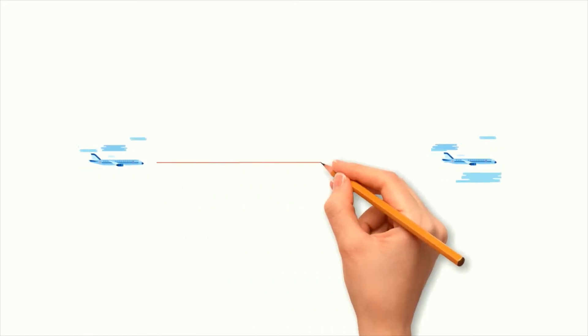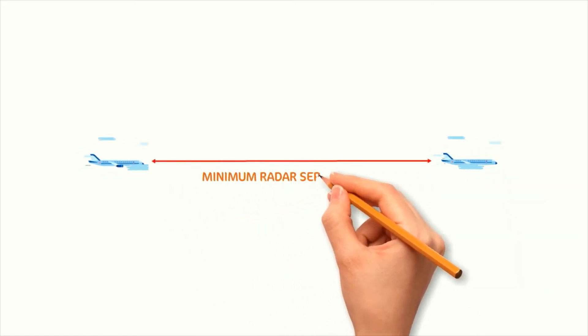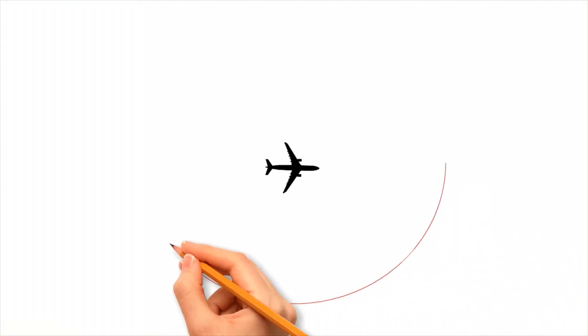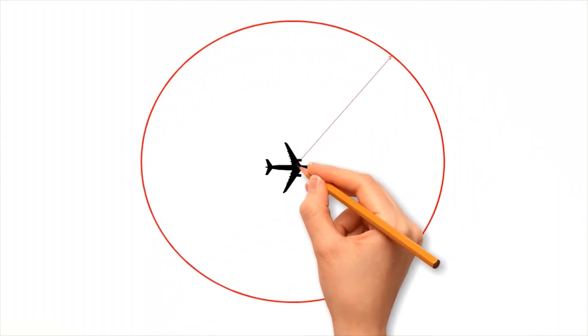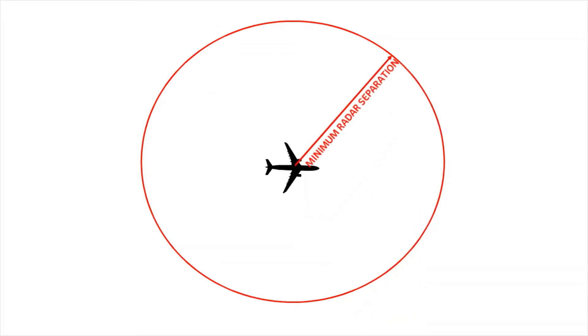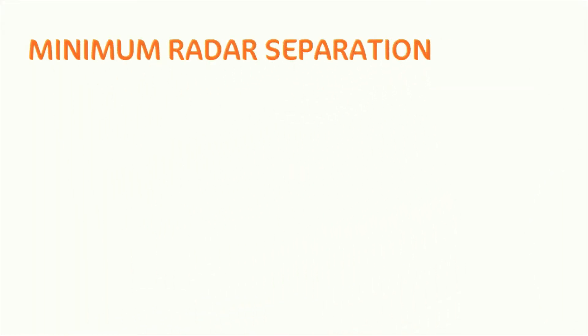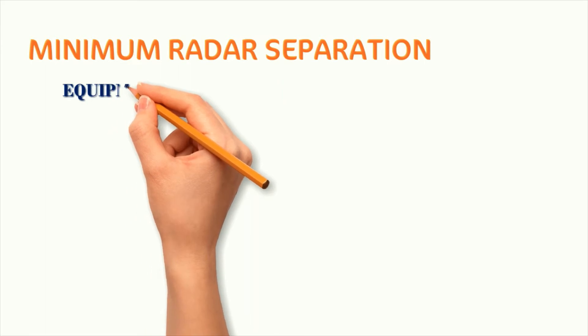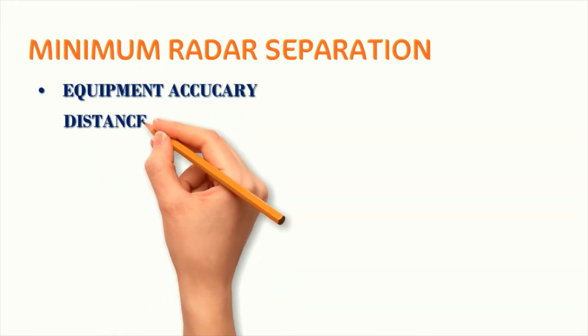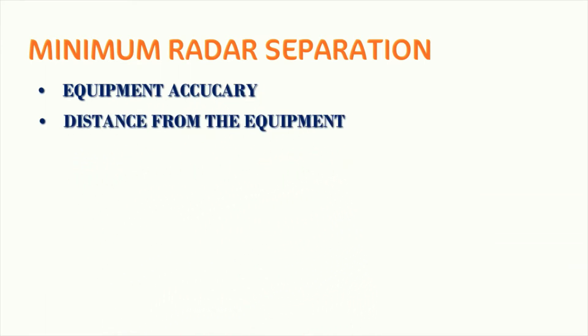Radar separation is achieved by ensuring that no aircraft comes closer to another aircraft than the specified minimum distance. In other words, if a circle is drawn using the value of minimum radar separation as radius, keeping the aircraft at the center, no other aircraft can enter this circle. The applicable minimum radar separation varies based on the accuracy of the radar equipment and the distance of the aircraft from the radar equipment.